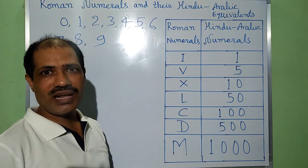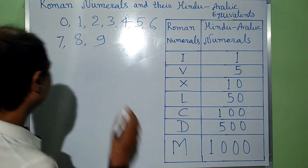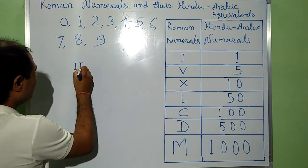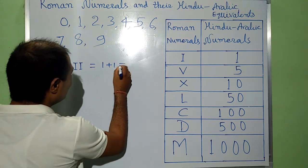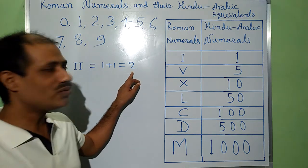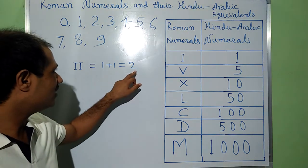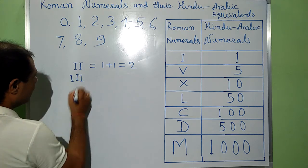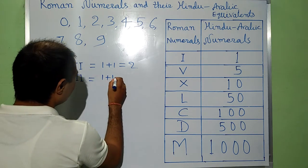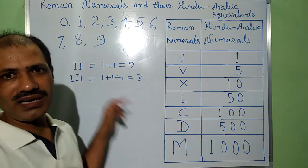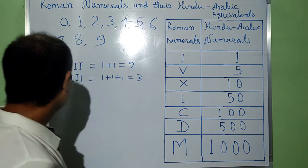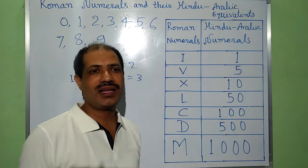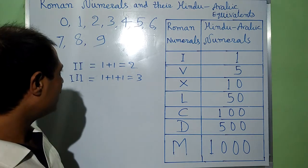The first law is known as the law of addition. When we put I and add one more I, it gives us 1 plus 1, that is 2, which is equivalent to Hindu-Arabic numeral 2. Adding another I gives us 3. This is the law of addition. We can repeat a symbol maximum 3 times in Roman numerals to create Roman numbers.